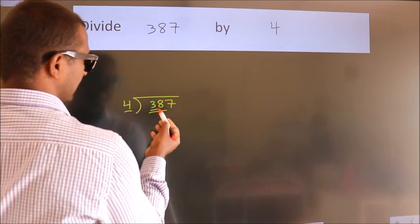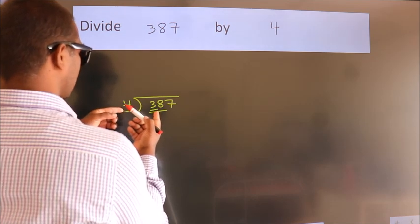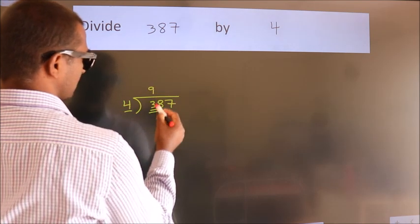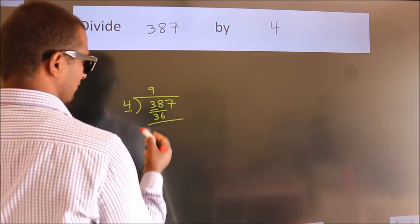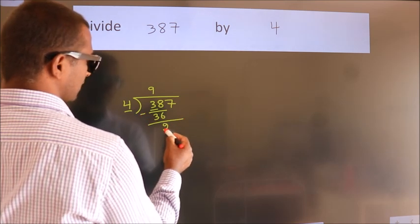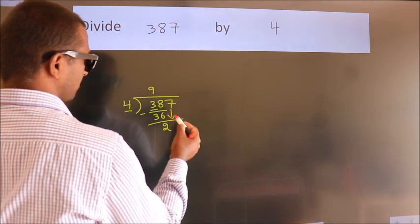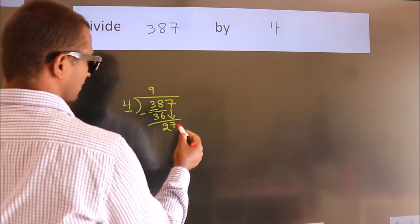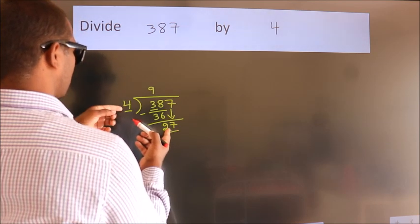38. A number close to 38 in the fourth table is 4 times 9, 36. Now we should subtract, we get 2. After this bring down the beside number, so 7 down, so 27. A number close to 27 in the fourth table is 4 times 6, 24.